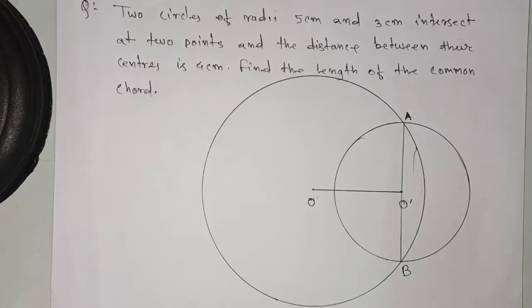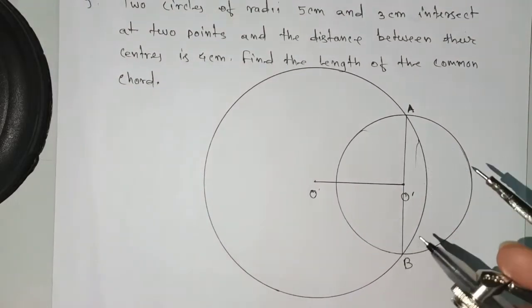Here we have one beautiful problem which can be solved algebraically and graphically, that means by construction. We're going to do so for this. Two circles, you can see from the diagram.